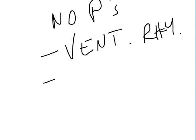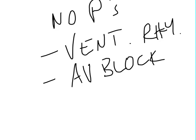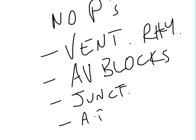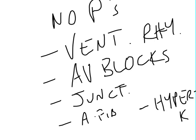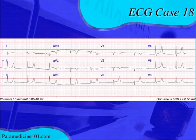The other things to think about are AV blocks and junctional rhythms. And obviously AFib — you have to think AFib if you don't see any defined P waves. And with hyperkalemia, usually the more severe cases will cause you to lose the P waves.